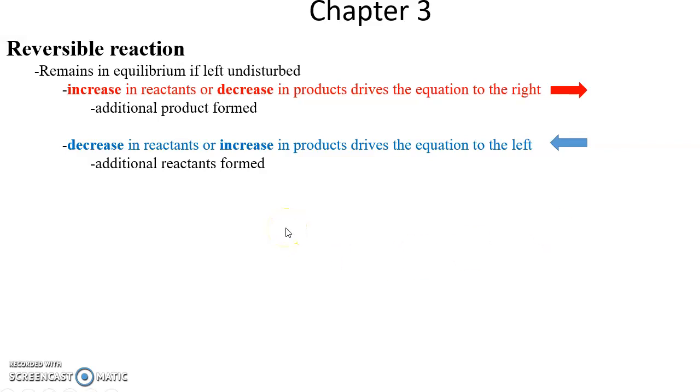If you add more reactants, you will cause a push toward making more products. Or if you decrease the amount of products, that will also drive the equation, drive it to the right, to the formation of more products. So add more reactants or get rid of the products—that will lead to more products being formed. And of course the reverse: decrease the reactants, remove reactants, or increase the products, add more products—that will drive it to the left, that will drive it to the formation of the reactants. This can be useful in some biological processes.